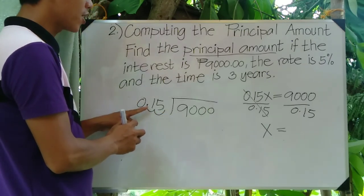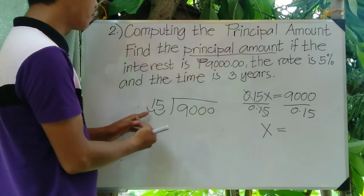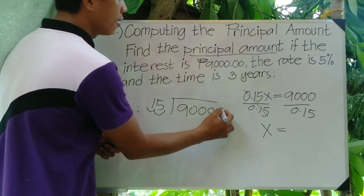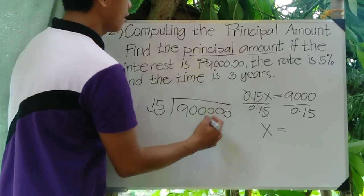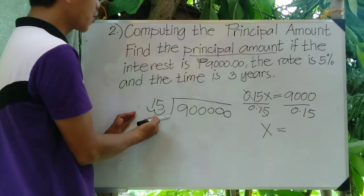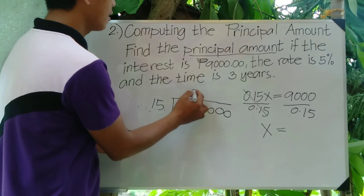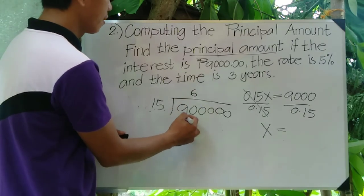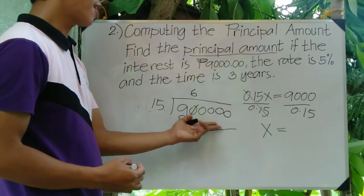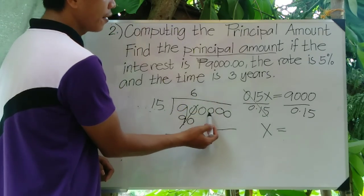The divisor becomes the whole number 15, and since we moved two decimal places, we add two zeros to the dividend, making it 900,000. Now divide 90 by 15 — that is 6. Six times 15 is 90, cancelled out. We still have four zeros left, so we add four zeros to 6: the answer is 60,000.